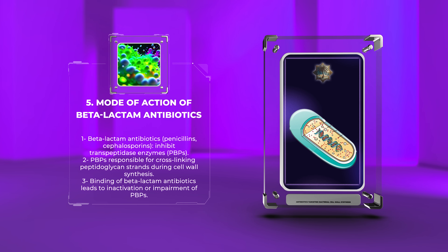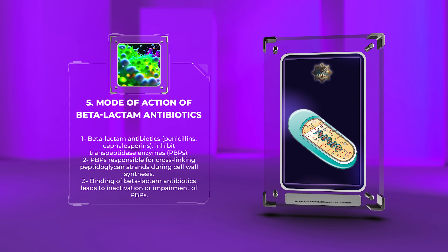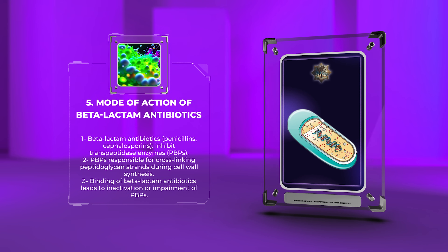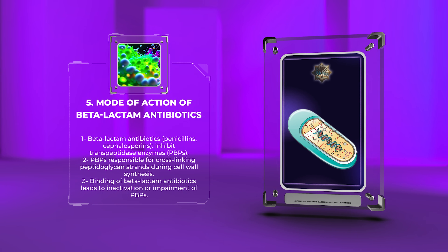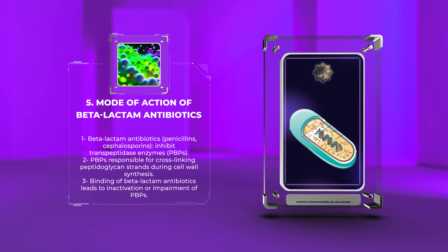These enzymes are responsible for catalyzing the cross-linking of peptidoglycan strands during cell wall synthesis. The binding of beta-lactam antibiotics to PBPs leads to inactivation or impairment of their activity, preventing proper cell wall formation.